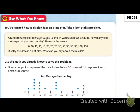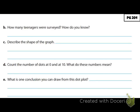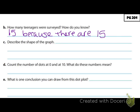Instead of an X, draw a dot to represent each person's response. We've seen line plots on our quizzes and our work in the previous lesson — now we're doing the same thing, only we're going to put a dot instead of an X. Looking at our dot plot, B asks how many teenagers were surveyed. We can see that there are 15 dots, so there would be 15 because there are 15 dots for each response.